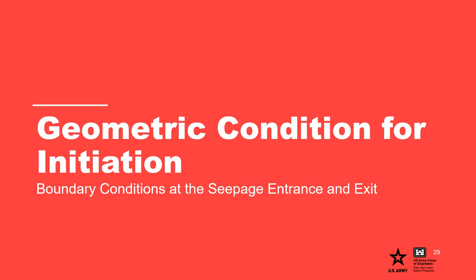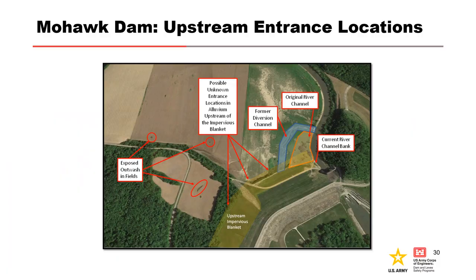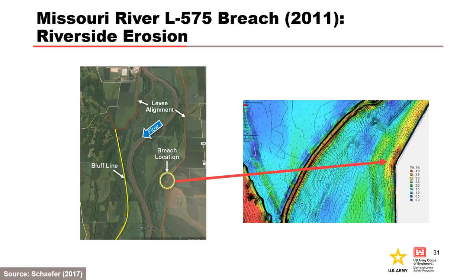Assessing the seepage path length requires an understanding of upstream (waterside) and downstream (landside) boundary conditions. In the plan view of Mohawk Dam, the team identified various defects in the alluvial top stratum considered as potential upstream seepage entrance locations, which were used to evaluate various seepage paths. Vegetation in the floodway can constrict and concentrate flow along the levee alignment, leading to riverside scour of the top stratum and levee embankment, directly connecting the foundation sand to the river and shortening the seepage pathway.